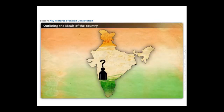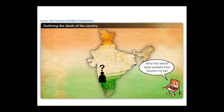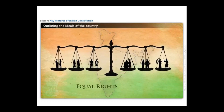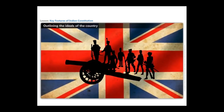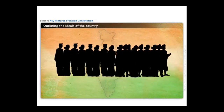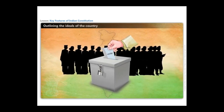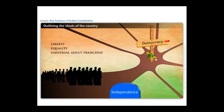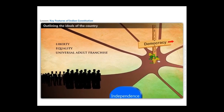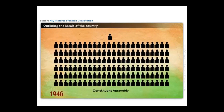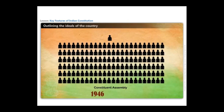Imagine yourself as a citizen of India during independence — how would you have wanted your country to be? Though you may have different opinions, a country where everyone has equal rights would have been one of your prime expectations. The long experience of authoritarian colonial rule convinced Indians that the free country had to be a democracy where every person has equal rights and everyone is allowed to participate in the formation of the government. People had to find ways in which a democratic government would be set up in India and the rules that would determine its functioning. Hence, a group of around 300 people became members of the Constituent Assembly in 1946 and met periodically for the next three years to write India's constitution.